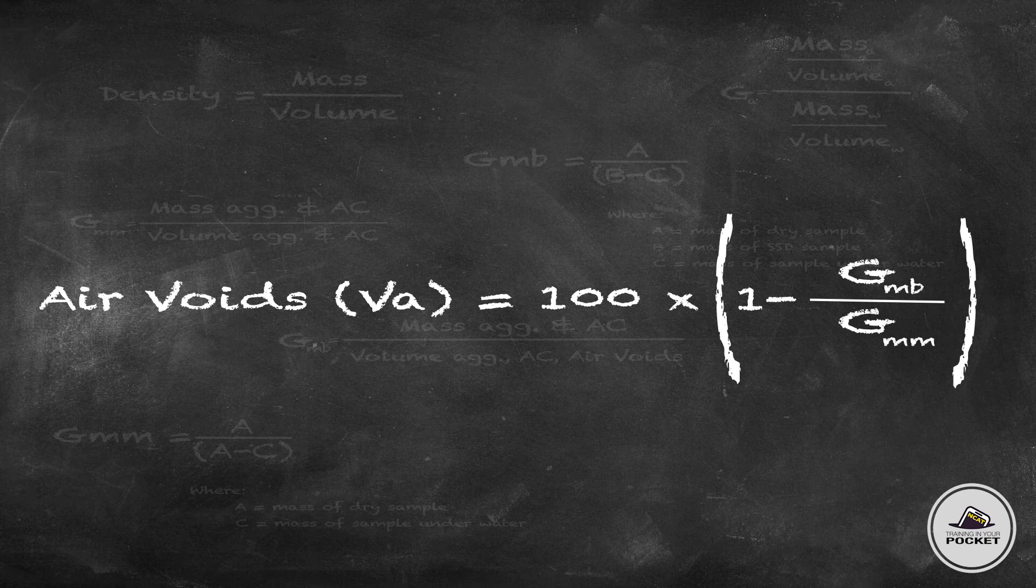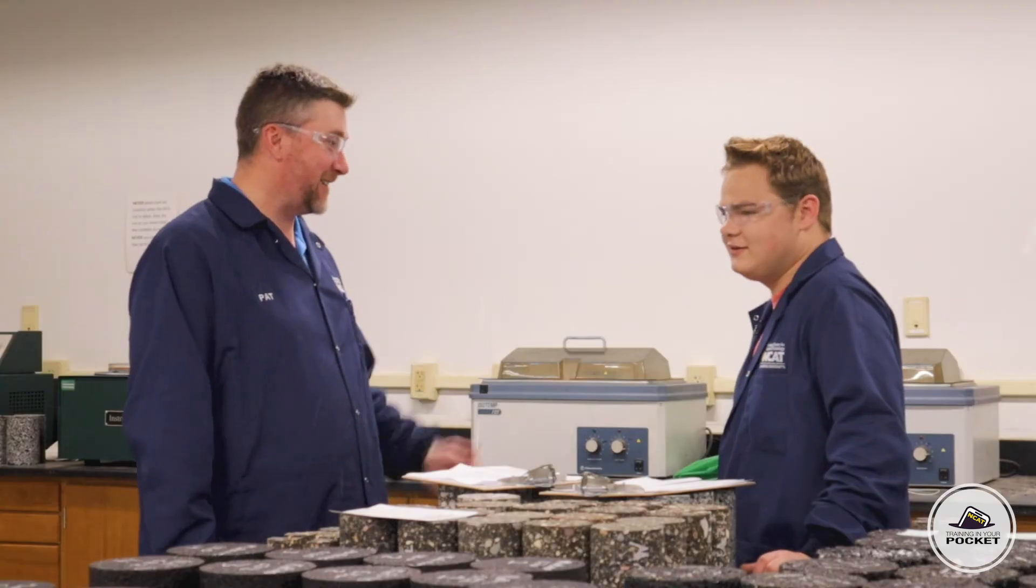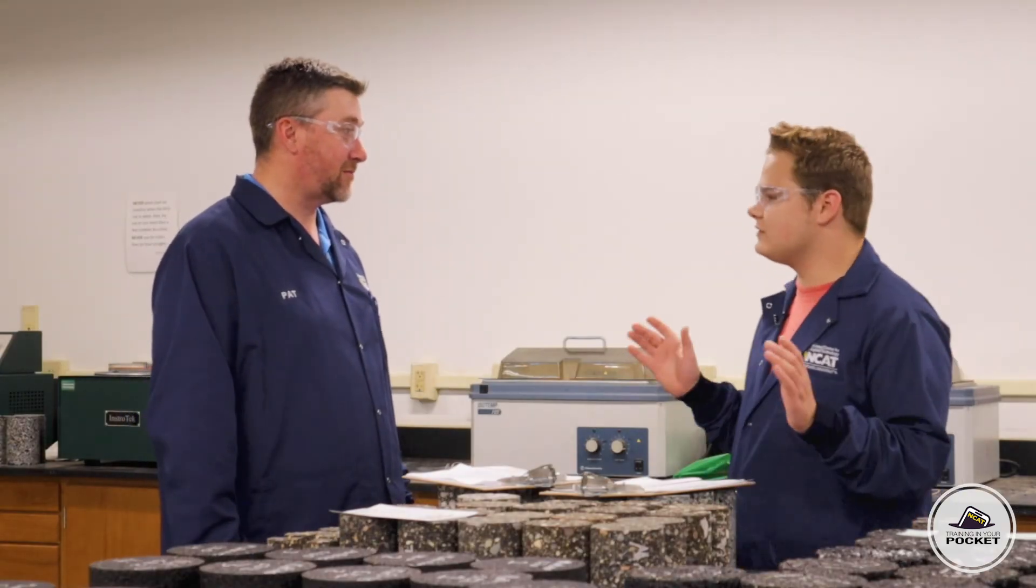And to do that, we're going to take the bulk specific gravity, divide it by the maximum specific gravity, subtract all of that from one, multiply by 100 to turn it into a percentage. So that's where we get the air voids of a sample. Sure it is. It's quite a process, but we talk about air voids all the time, so I'm glad to better understand where it comes from.